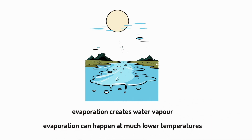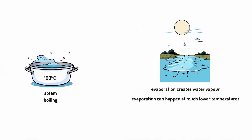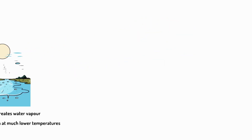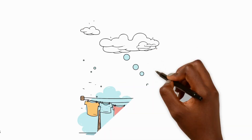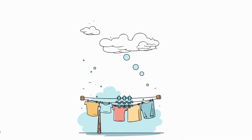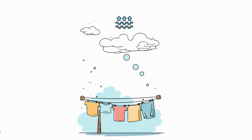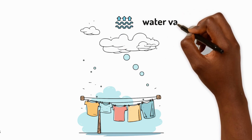Let's take a look at some everyday examples of evaporation. Firstly, when we hang clothes on a washing line, the water evaporates from the wet fabric as it dries in the sun. The liquid water turns into water vapour gas.